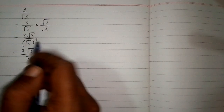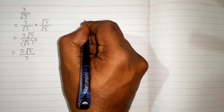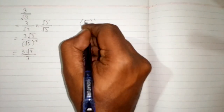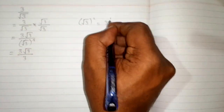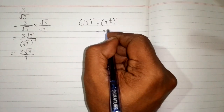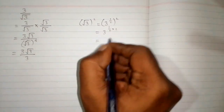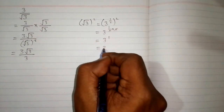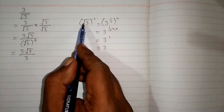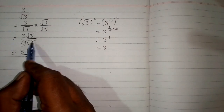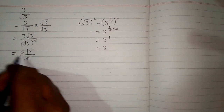Now the question is how can we cancel this square root and this square. Consider this separately: the square of square root of 3, where square root of 3 means 3 raised to the power 1 upon 2. By the rule of indices, we multiply the powers: 3 raised to the power 1 upon 2 multiplied by 2. We can cancel the 2s, giving 3 raised to the power 1, which equals 3. So the square of square root of 3 equals 3, and we can cancel the square root and square directly.